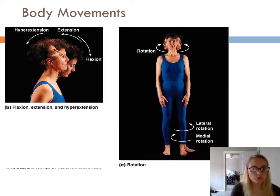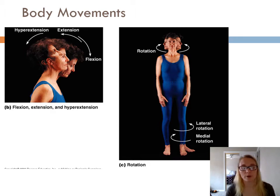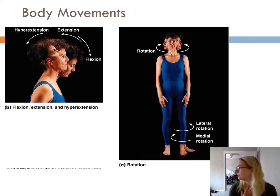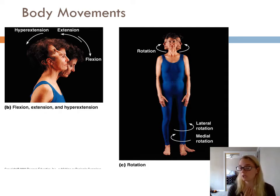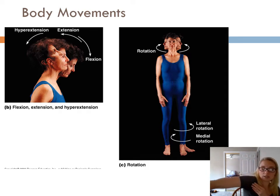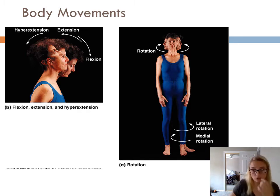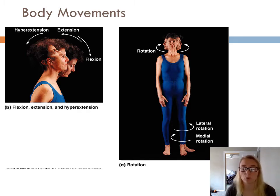We can also do some rotational movements in different parts of our body. We can rotate around our head — these are rotation movements. You can call them right rotation, left rotation, or lateral rotation. We can do rotation at the arm, and also rotation at the hip, where you keep your whole leg straight and just rotate at the hip.